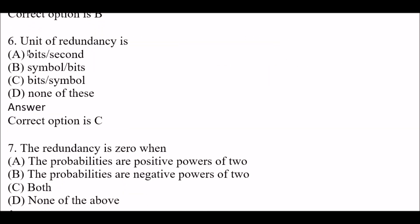Next question: The unit of redundancy is — Option A: bits per second. Option B: symbols per bits. Option C: bits per symbol. Option D: none of these. The right answer is Option A, bits per symbol.